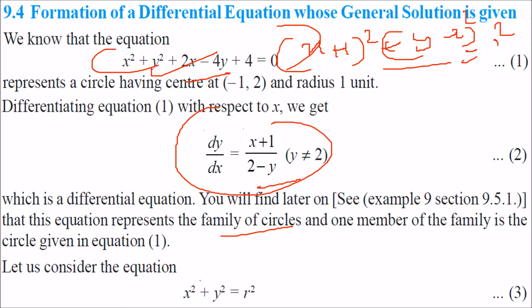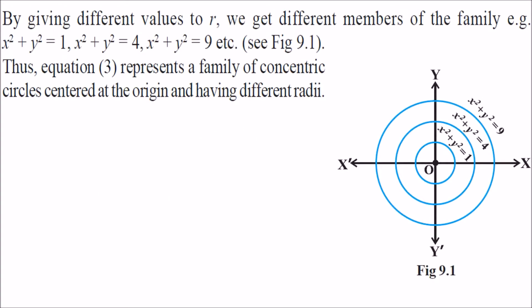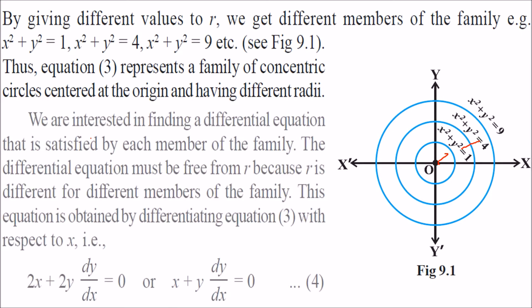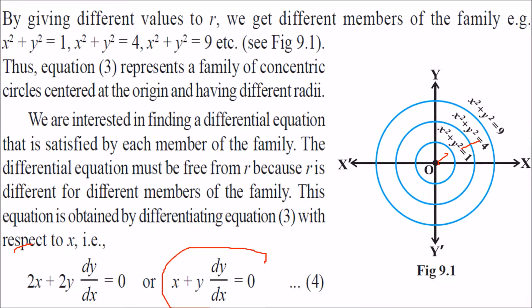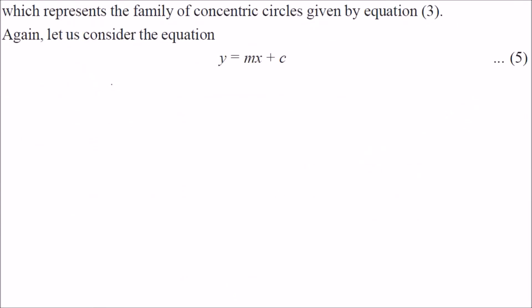If you take x square plus y square equal to r square and change the radius r1, r2, r3, then it is a family of circles. For example: x square plus y square equal to 1, equal to 4, equal to 9 — all these are the family of circles. When you differentiate both sides, you get 2x plus 2y dy by dx equal to 0, that is x plus y dy by dx equal to 0. This represents the family of these circles.